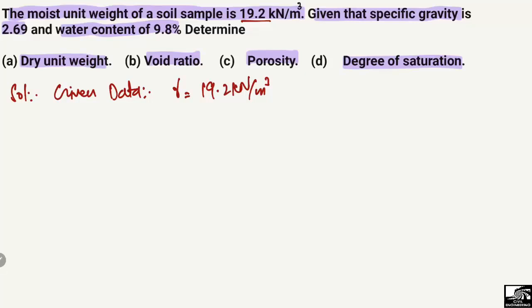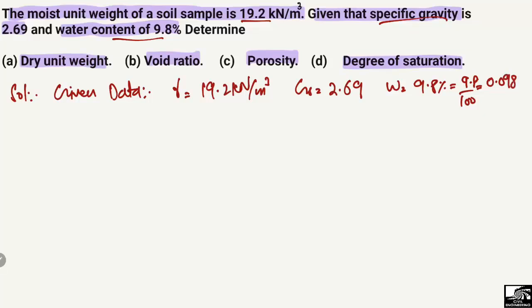The specific gravity represented by Gs is 2.69, and the water content is 9.8 percent. If we change this to decimal, so 9.8 divided by 100, we get 0.098. Starting now with the first unknown: the dry unit weight.